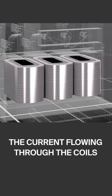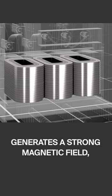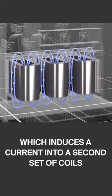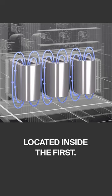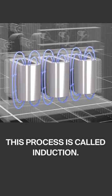The current flowing through the coils generates a strong magnetic field which induces a current into the second set of coils located inside the first. This process is called induction.